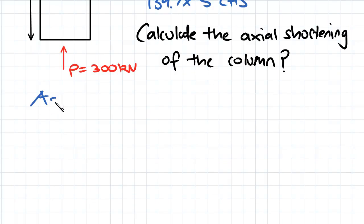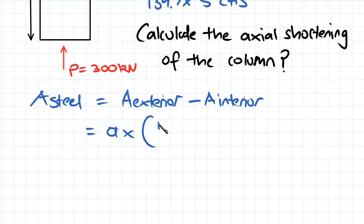So the area of steel that we have is going to be equal to the area of the exterior with that full 139.7 diameter and subtracting off the interior area. So the exterior area is going to be pi times, we'll take that diameter of 139.7 and divide it by 2, square it, and then for the interior area, we're going to take that whole diameter.